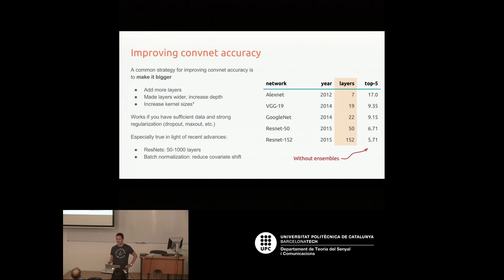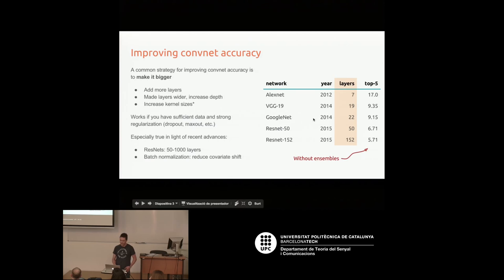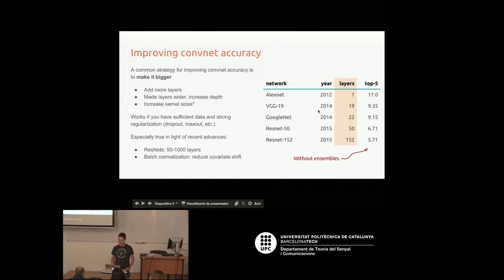Yesterday there was a question about how many layers to put in networks and how big to make them. If you have enough data, the answer is usually bigger is better — adding more layers or increasing the width of layers often gives a performance boost, provided you have sufficient regularization. These are the figures for the ImageNet Challenge — a classification task with about a million examples and a thousand classes.